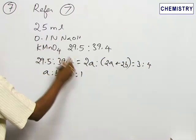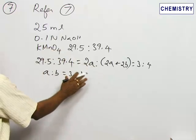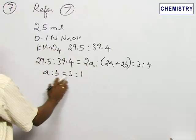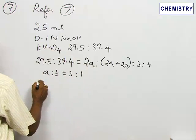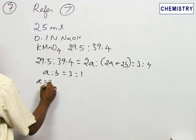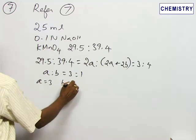A is to b is 3 is to 1. One part is answered here. Now, assume a is equal to 3 and b is equal to 1.